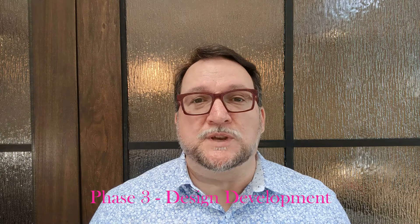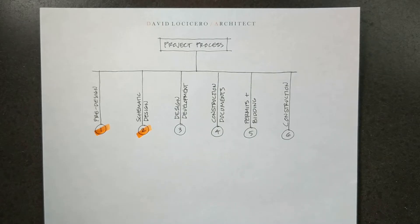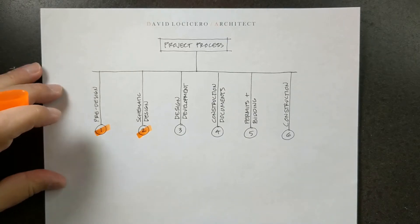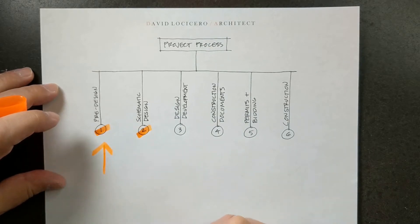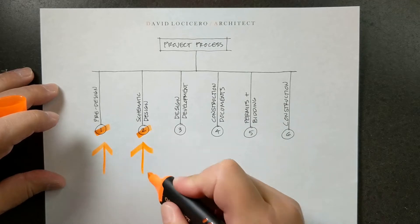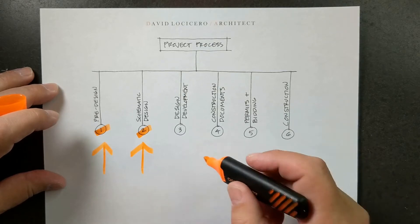In this video I'm going to discuss what we call design development, which is the third phase of the architectural project process. It's another fun part — schematic design was awesome, and design development takes that awesomeness and makes it even better. Just to recap where we are: in pre-design we collected all the information needed to start design, and in schematic design we worked with you to come up with a scheme you really love — a layout of the spaces and the general appearance of the building.